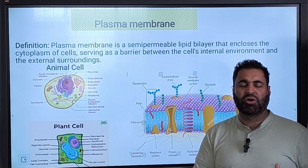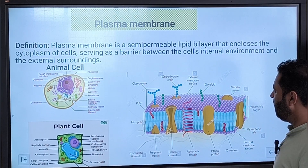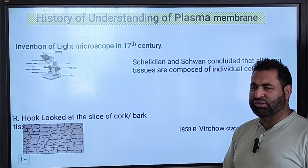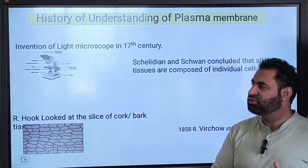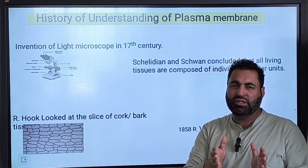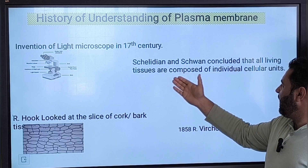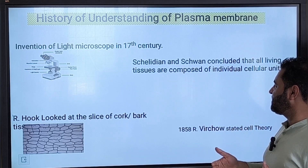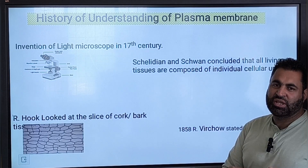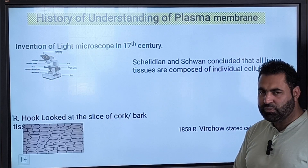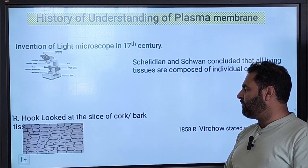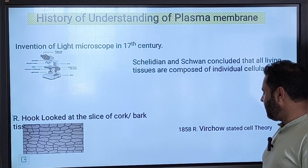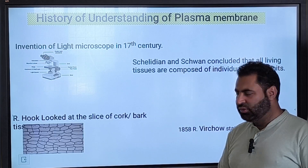But that was not always the situation, so we will review different models of the plasma membrane based on the evidences present at that time — how different models were portrayed by different scientists. If we go back to history, in the 17th century there was the invention of the light microscope. Under microscopy it was found that cellular life forms have very intricate structures. Then Schleiden, who was a botanist, and Schwann, who was a zoologist, together simultaneously said that plant or animal tissues are composed of individual cellular units. Similarly, Robert Hooke looked at a slice of cork and found a honeycomb structure. In 1858, Virchow stated cell theory.